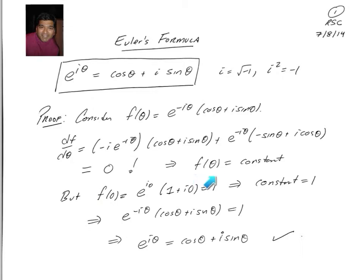That means the function f of theta is a constant. Since it's a constant, we can evaluate it at a convenient point and figure out what it is. That most convenient point is just theta equals 0. But f of 0 is e to the i times 0, and e to the 0 is just 1, times cosine 0, which is 1, plus i sine 0, which is 0. So f of 0 is 1. Since the function itself is a constant and its value at 0 is 1, the constant itself is 1, or e to the minus i theta times cosine theta plus i sine theta equals 1. If we invert the e to the minus i theta, we get e to the i theta is cosine theta plus i sine theta.